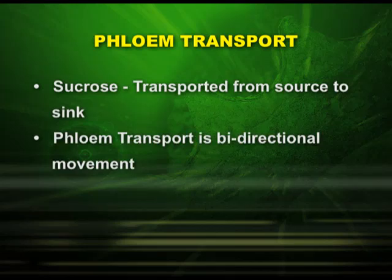The sources are the leaves where sucrose is initially prepared in the form of starch, converted into sucrose, and then transported to the sink — that is, the various storage parts of the plant body. An important point is that phloem transport is a bidirectional movement, unlike the unidirectional movement in xylem, because food is prepared in leaves and transported to various parts of the plant body.